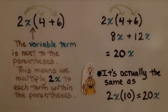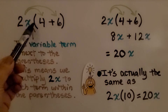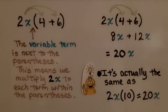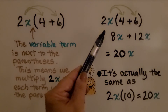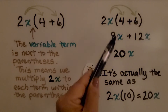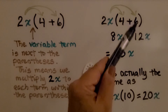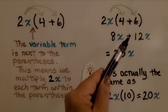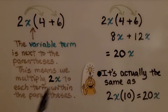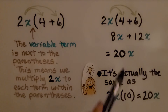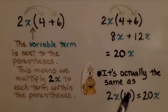In this one we have the variable term 2x next to the parenthesis. This means we multiply 2x to each term within the parenthesis — we distribute it. 2x times 4 is 8x and 2x times 6 is 12x. We have an addition sign, so we know it's equal to 20x. It's actually the same as multiplying 2x times 10, since 4 plus 6 is 10, which gives us 20x.